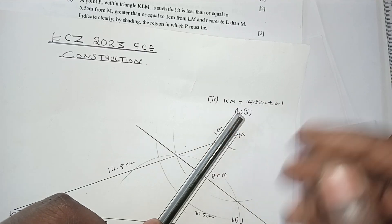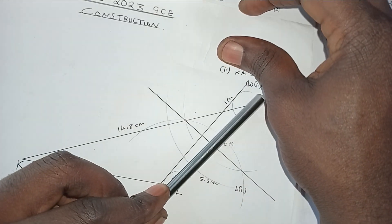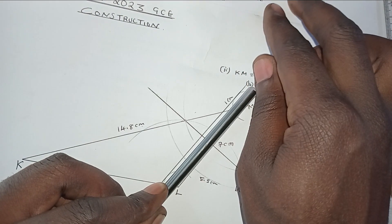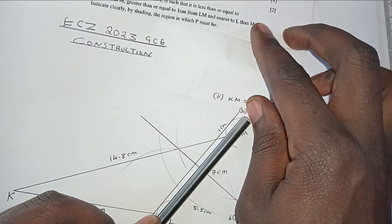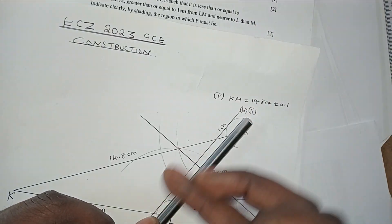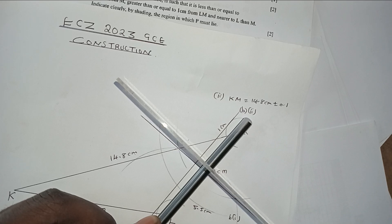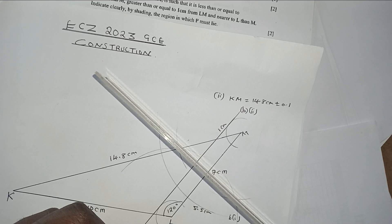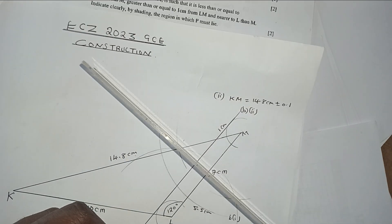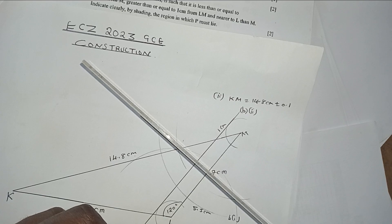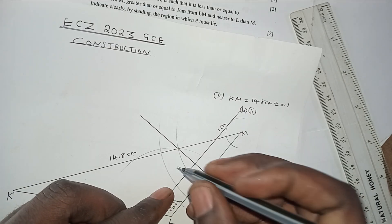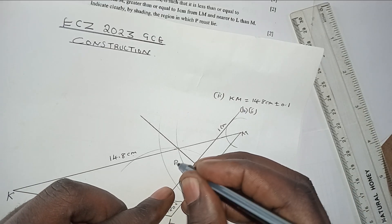The condition also states P must be nearer to L than to M. L is on the left side and M is on the right side. The perpendicular bisector of LM divides the space into two equal parts, so the region nearer to L is on the left-hand side of that bisector. This leaves us with a specific portion of the triangle.